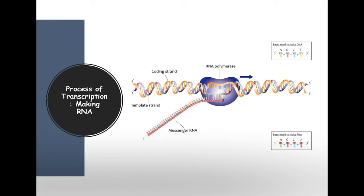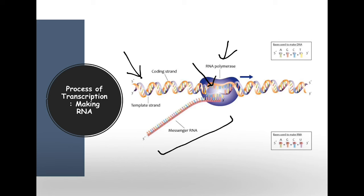Here I want to introduce you to some of the key players. We have our DNA template strand. Remember, DNA when it makes a copy of itself is semi-conservative. But when we're talking about making a messenger RNA transcript, this process is transcription, and you do need to use one of the parent strands as the template to make the growing strand of messenger RNA. Another key player other than the DNA parent strand is RNA polymerase, which is critical at making the messenger RNA.